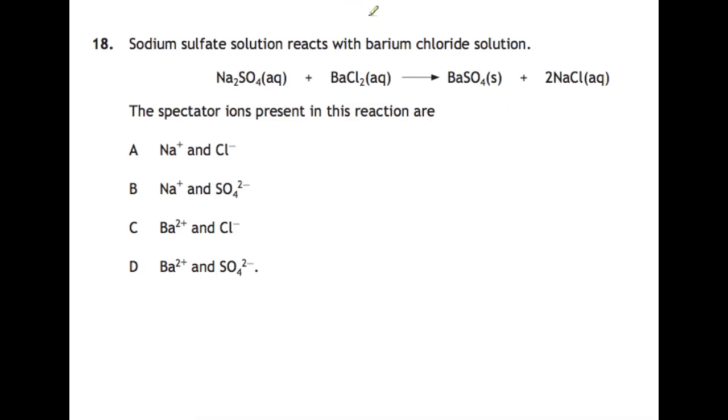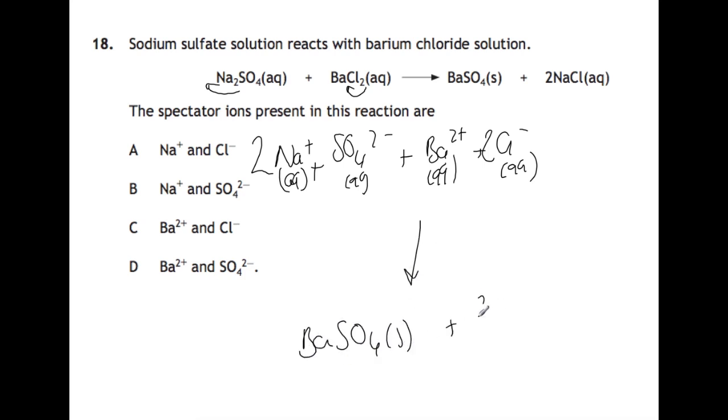Question eighteen: sodium sulfate solution reacts with barium chloride solution. You're to identify the spectator ions. You're best to write this out in full as ionic formula. So the 2 comes out to the front, we end up with 2 Na plus and they are aqueous, plus a sulfate ion which is also aqueous. We have barium chloride, which are 2 aqueous ions, and the 2 goes in front of the chloride ions. That's becoming barium sulfate, which is a solid, plus 2 sodium ions and 2 chloride ions. We then need to identify our spectator ions. They're the ones that do not change. So we've got sodium and sodium, they haven't changed. And we have chloride and chloride, which haven't changed. So Na plus and Cl minus are the spectator ions.